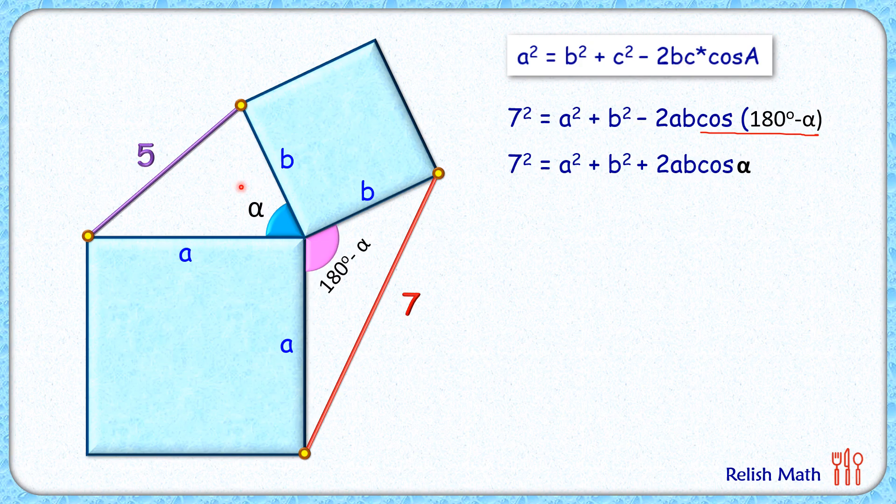we'll get 5² = a² + b² - 2ab cos α. Now with these two equations, let's add these two equations.